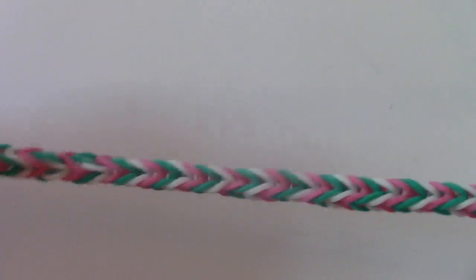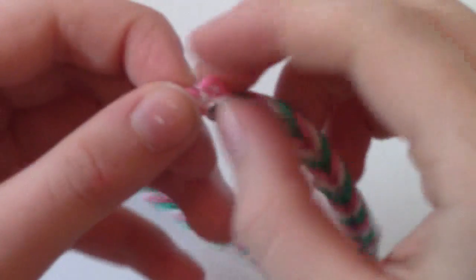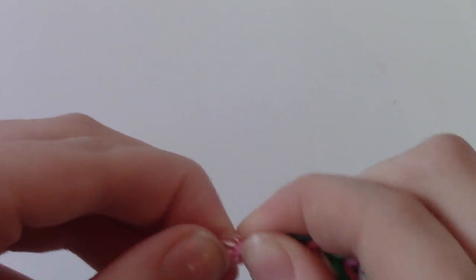Okay, so I already took it off the loom, and this is what it looks like. I had a mess up there, but that's okay. So I already put the C-clip on, but I bet you know how to put on C-clips.